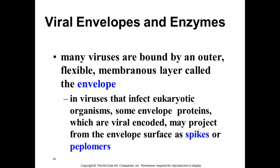A lot of the viruses that infect us have an envelope layer, and that envelope is actually derived from our own membrane — but they convert it into their envelope. They insert their proteins into it and change its structure so it's no longer our membrane but their envelope. Those proteins that stick in the membrane are referred to as spikes — also sometimes called peplomers.